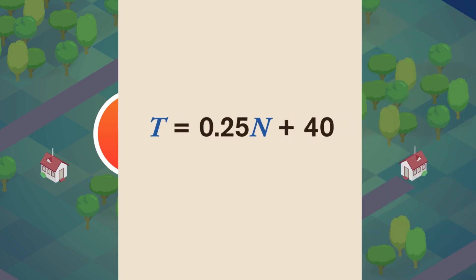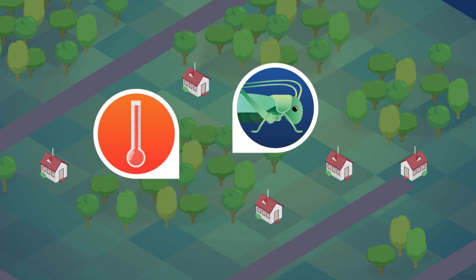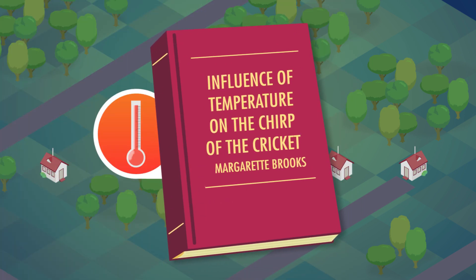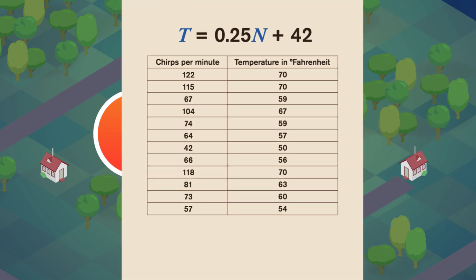He proposed that the temperature outside in degrees Fahrenheit equals 0.25 times the number of chirps per minute plus 40. But Dahlberg didn't share the data he used or how he got his equation, which means he wouldn't get published today, since showing your work is fundamental to modern science. Margaret Brooks, who published 'The Influence of Temperature on the Chirp of the Cricket' in a popular science magazine 16 years earlier, did show her work. Brooks was testing a formula proposed by someone known only as WGB using real cricket data.